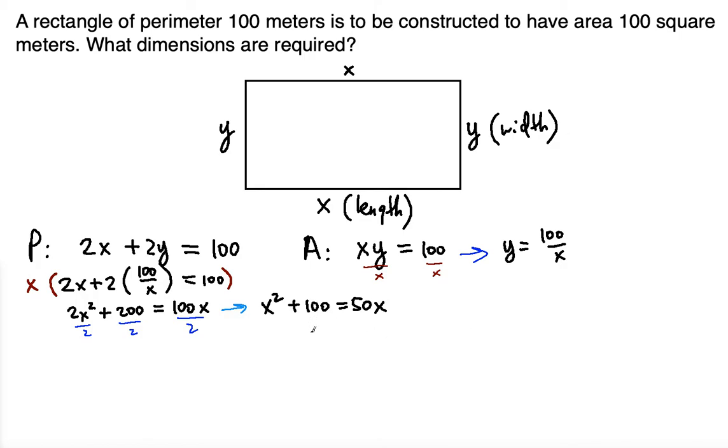Now what you want to do, you want to express this in standard form, this quadratic in standard form. So essentially you want to subtract 50x on both sides and then you will have a 0 on the right side which makes it a standard form equation. So that's going to be x squared minus 50x, we want to place that first in the order of decreasing powers of x, plus 100 is equal to 0.